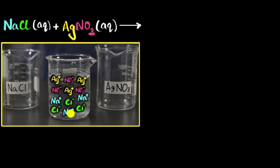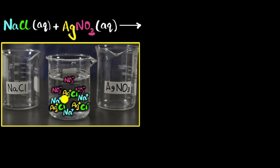Now, because these ions are together, they can form new combinations. Cations should always combine with anions. So Na can combine with NO3, but there's nothing special because they will dissociate again. But Ag can also combine with Cl. When Ag combines with Cl, something interesting happens — AgCl is insoluble, and therefore it will precipitate out. And that's the reason why this whole thing looks white: because of the AgCl precipitation.